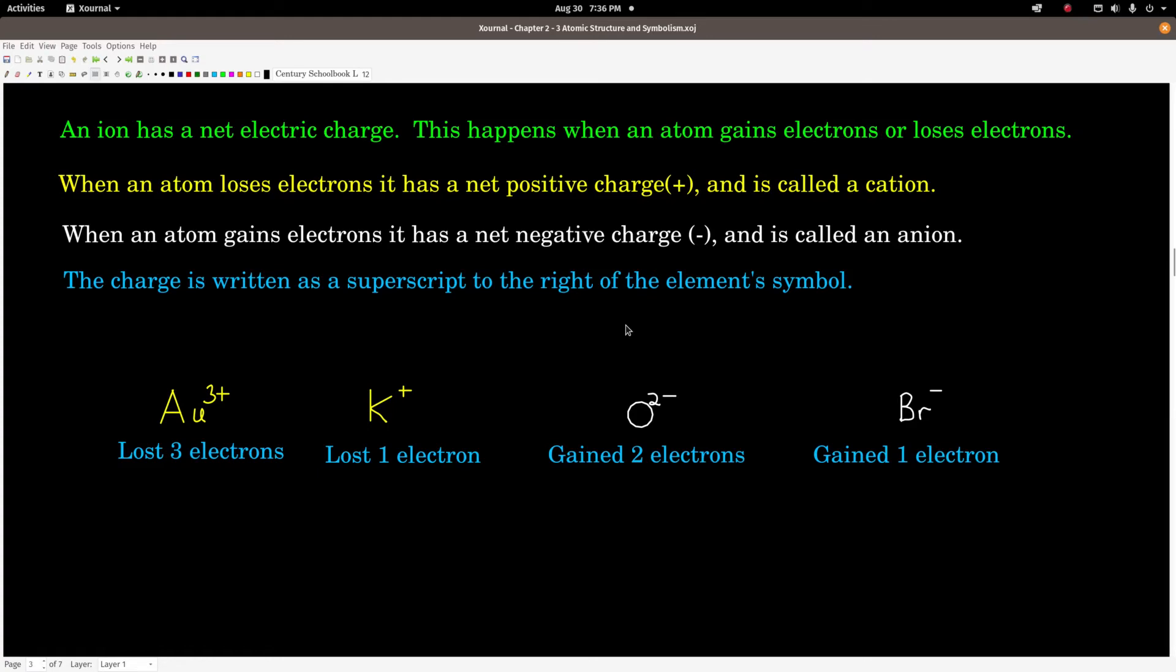So, an ion is an atom or a compound that has a net and overall electric charge. The only way this can happen is by moving around electrons. You can either gain electrons or lose electrons. It's a lot harder to change the number of protons, and if we do that, we change what element it is. So, that's not what we're talking about here. We're talking about only moving around electrons. So, if an atom loses electrons, it has less negative charges than it does positive charges. So, overall, it has a net positive charge, and it's called a cation.